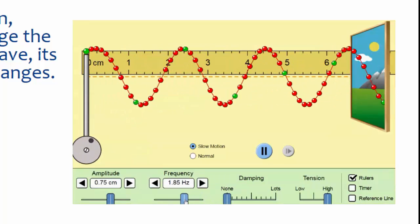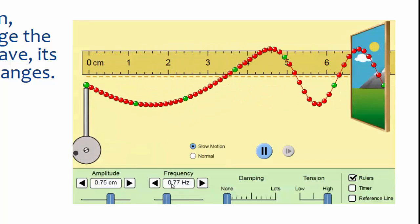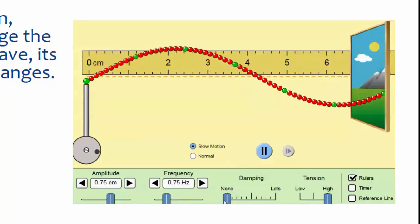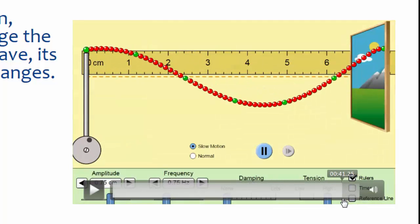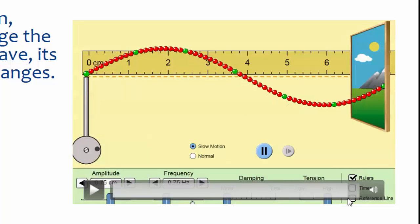Now let's decrease the frequency to 0.75 Hz. You'll notice that when frequency decreases, the wavelength actually increases. In this case, half the wavelength is roughly about 4 cm.